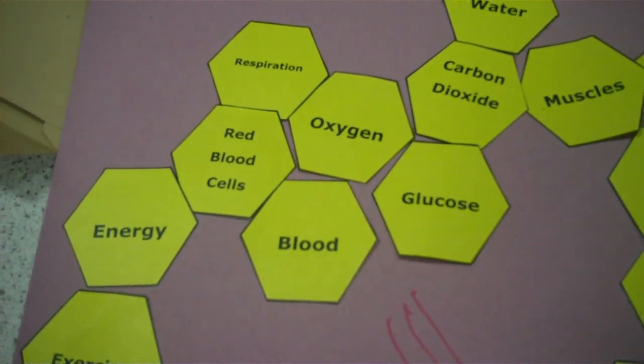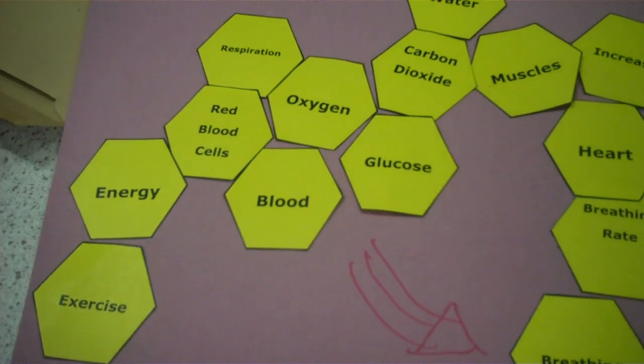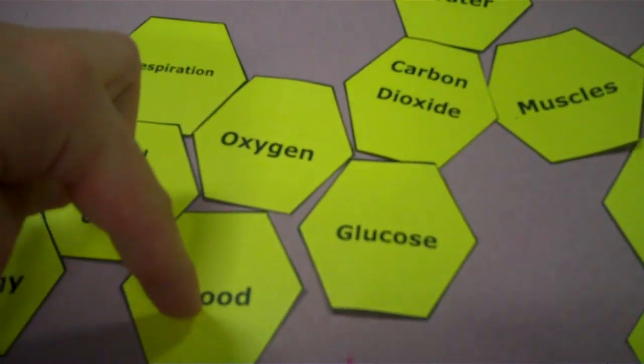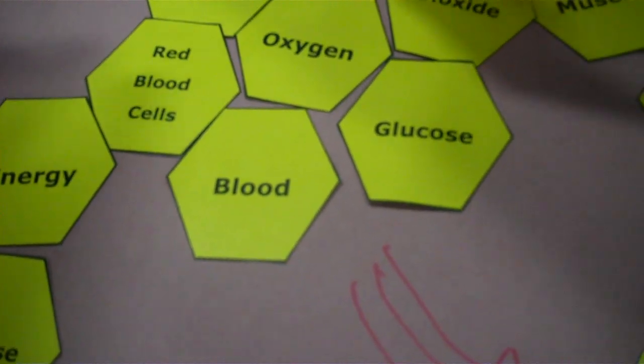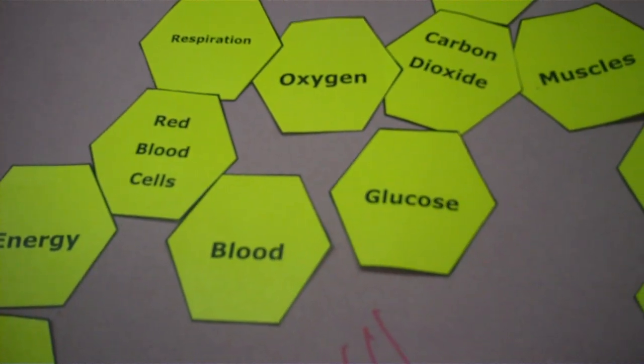Right, so this is our hexagon blog thing. Let's start off. We have blood, we have oxygen, we've got respiration. We need oxygen and glucose.